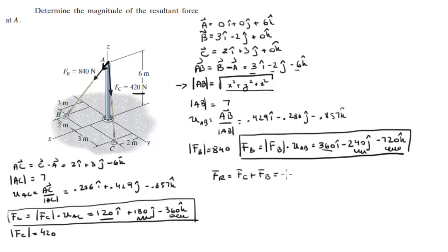you're gonna get that the resultant force is equal to 480 I minus 60 J minus 1080 K. But they're asking you for the magnitude of this resultant force.